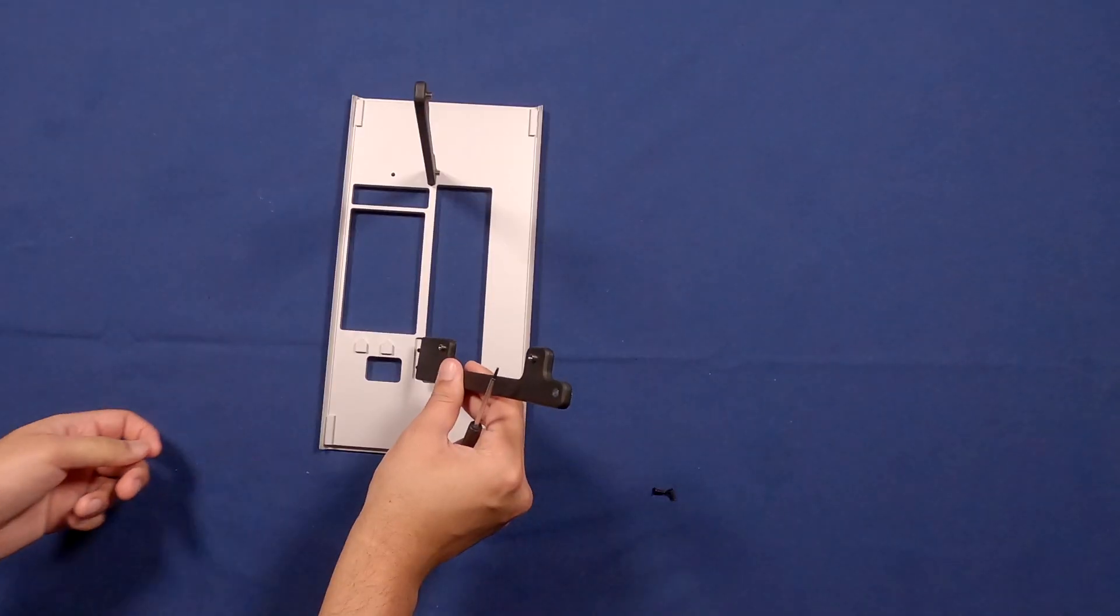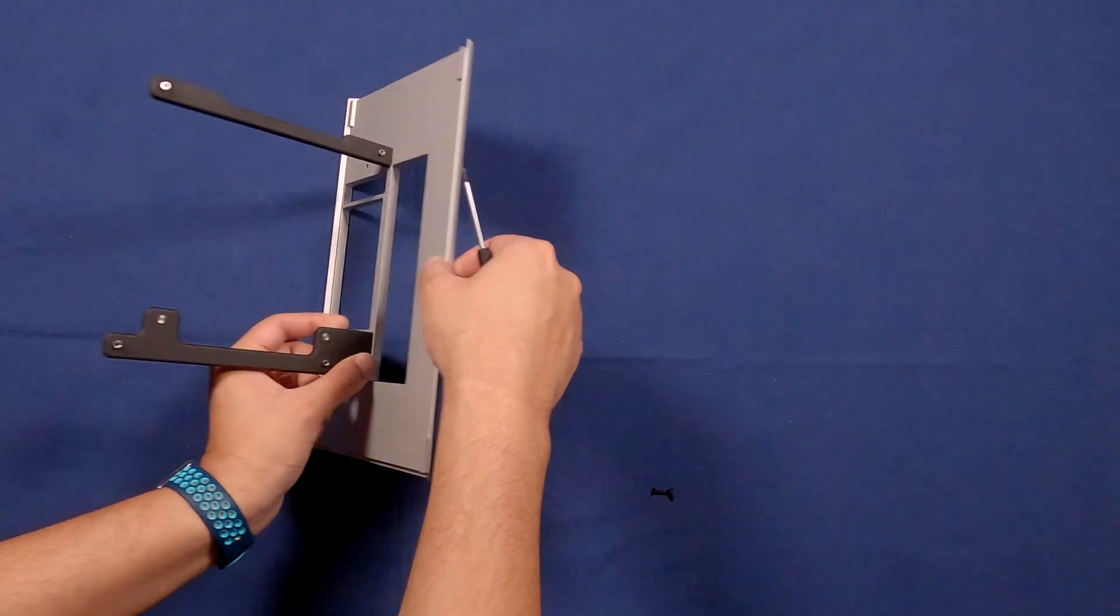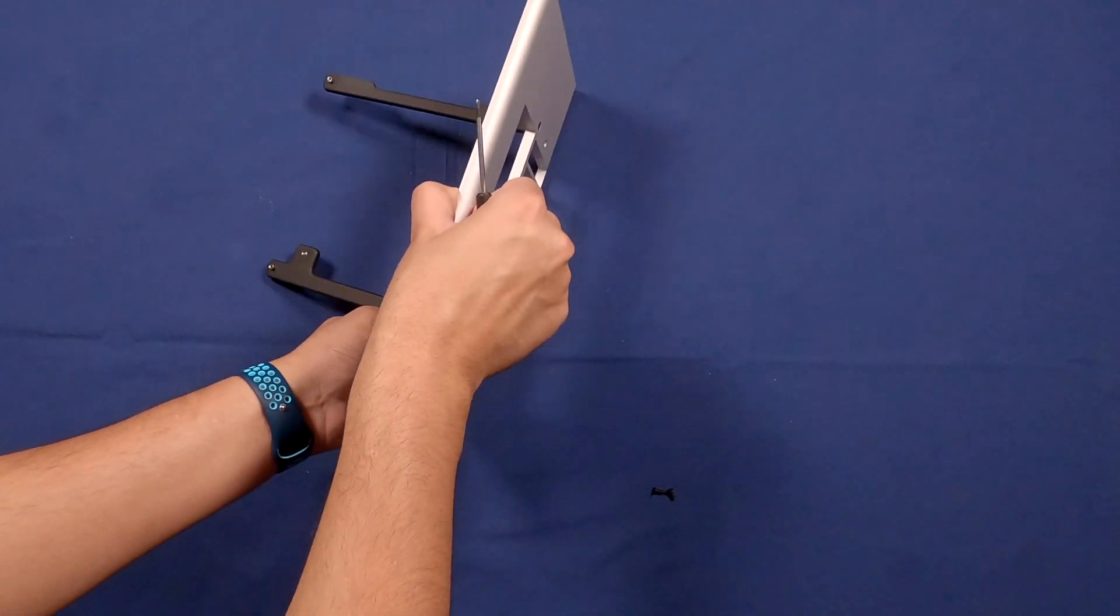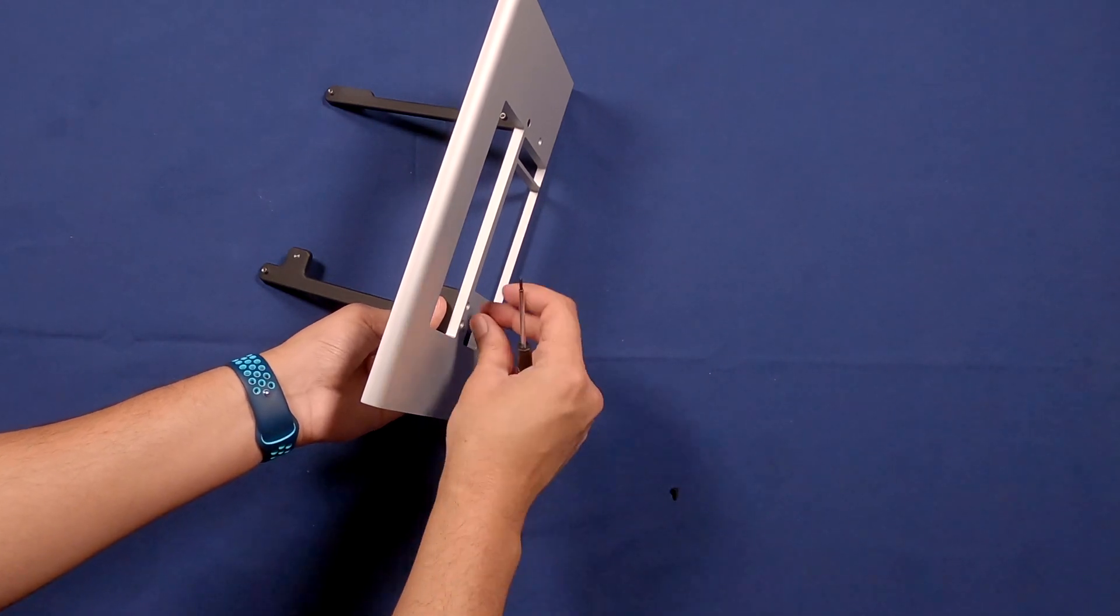Next we're going to place the bottom arm into position. Here you're going to also flip it over. This time there are two screws to tighten. Make sure that the notch is facing upwards on both arms.